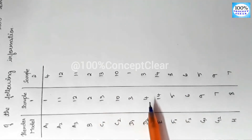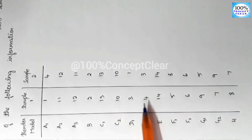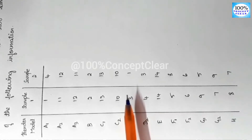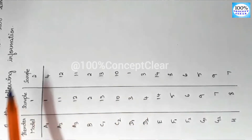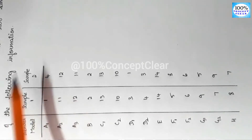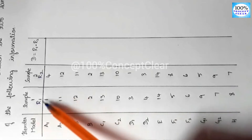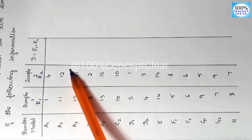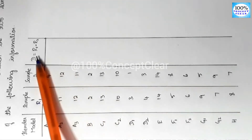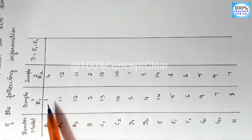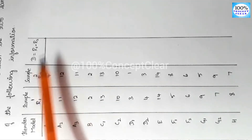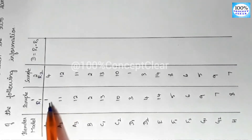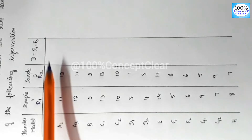In this sum, we use the first method. We calculate R1 and R2, then compute D = R1 minus R2. For the first item, R1 = 1 and R2 = 4, so 1 minus 4 equals minus 3. For the second item, R1 = 11 and R2 = 12, so 11 minus 12 equals minus 1. For the third item, R1 = 12 and R2 = 11, so 12 minus 11 equals 1.